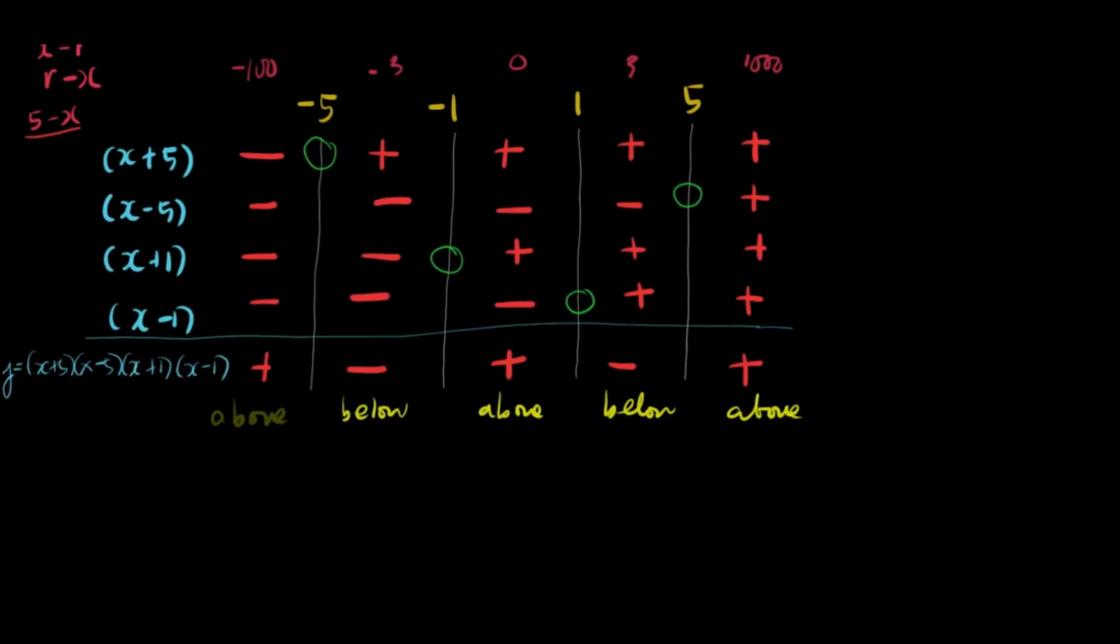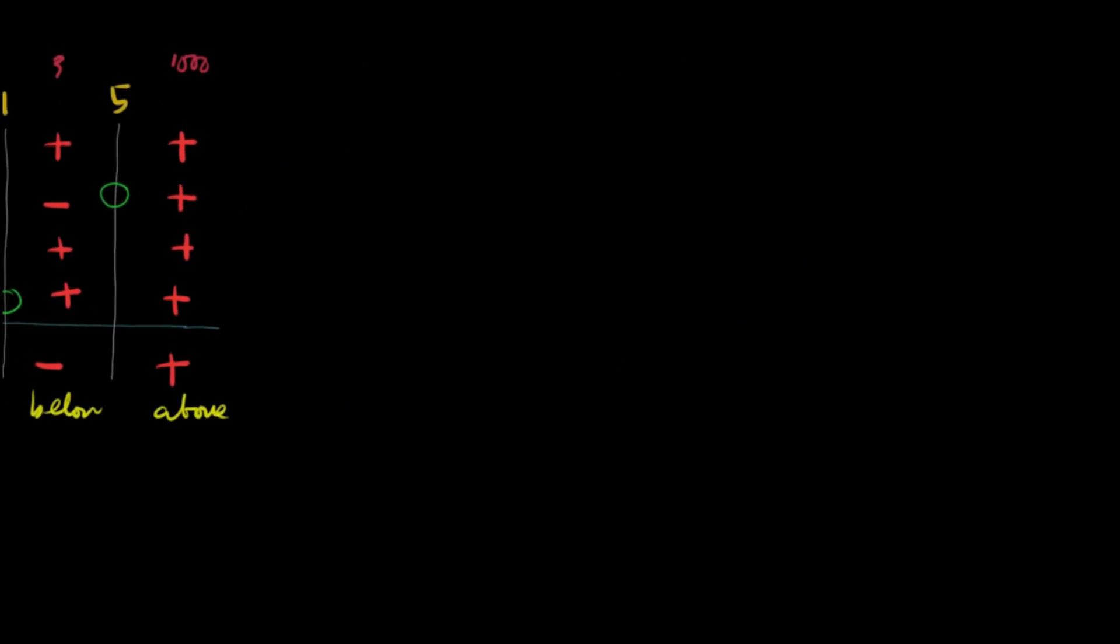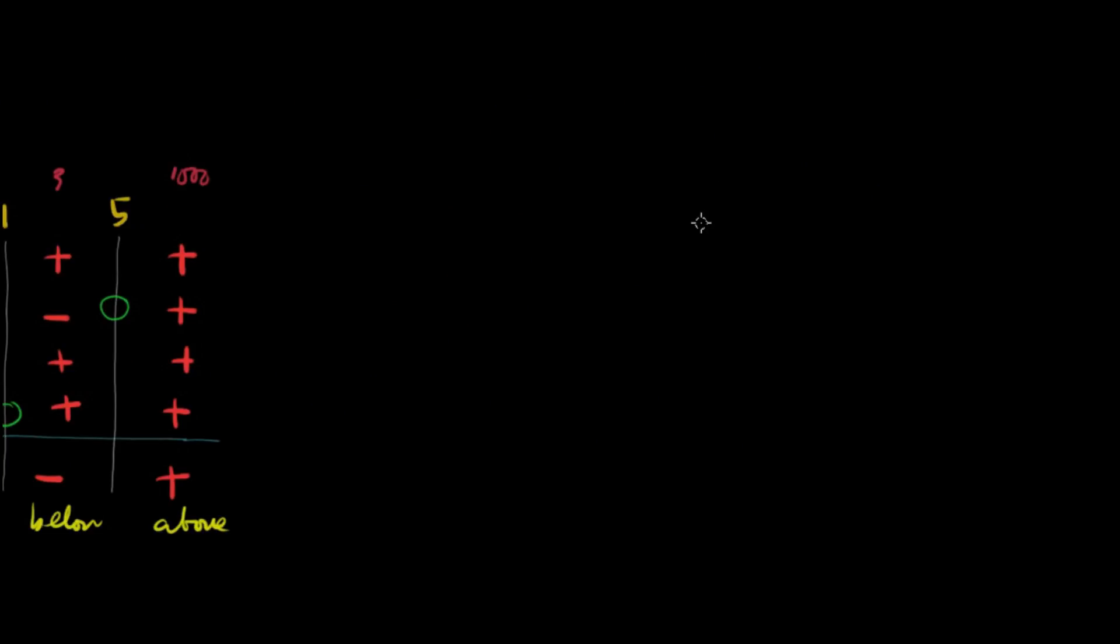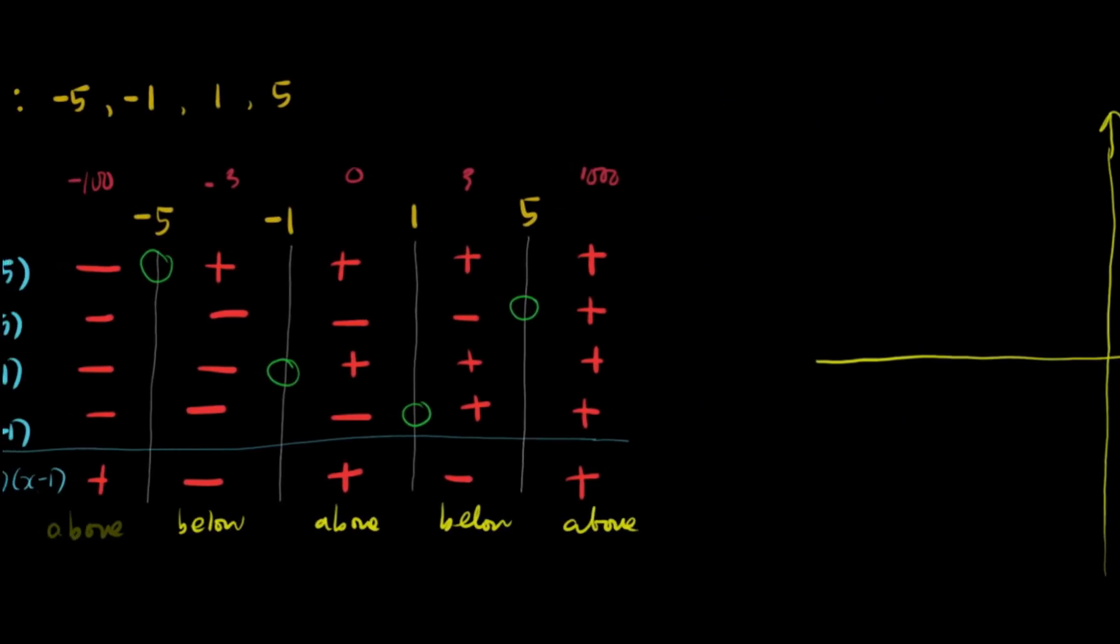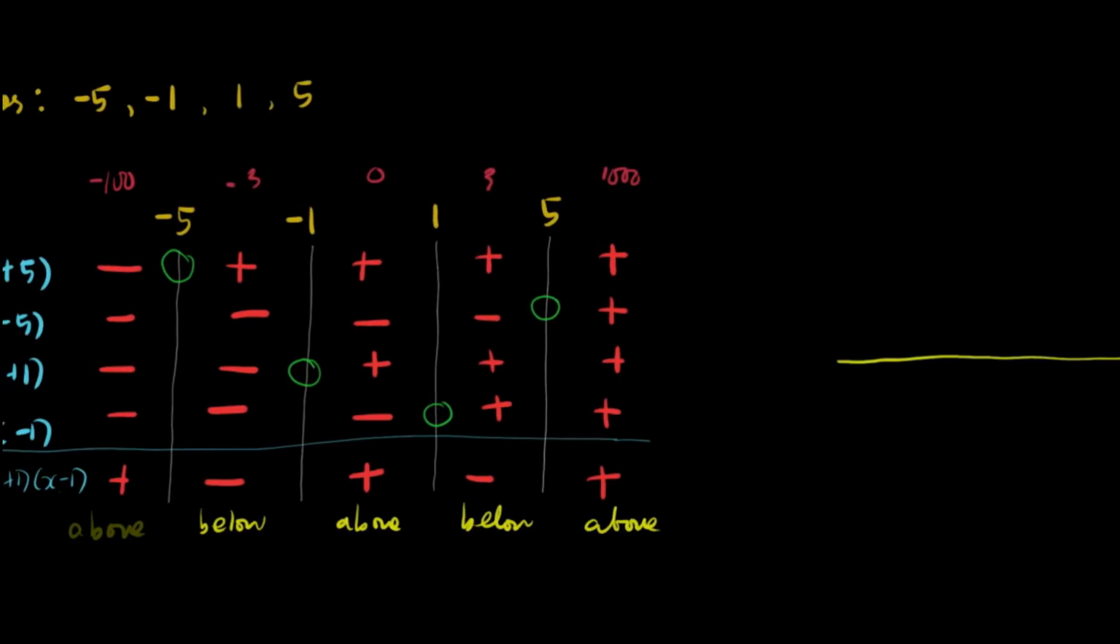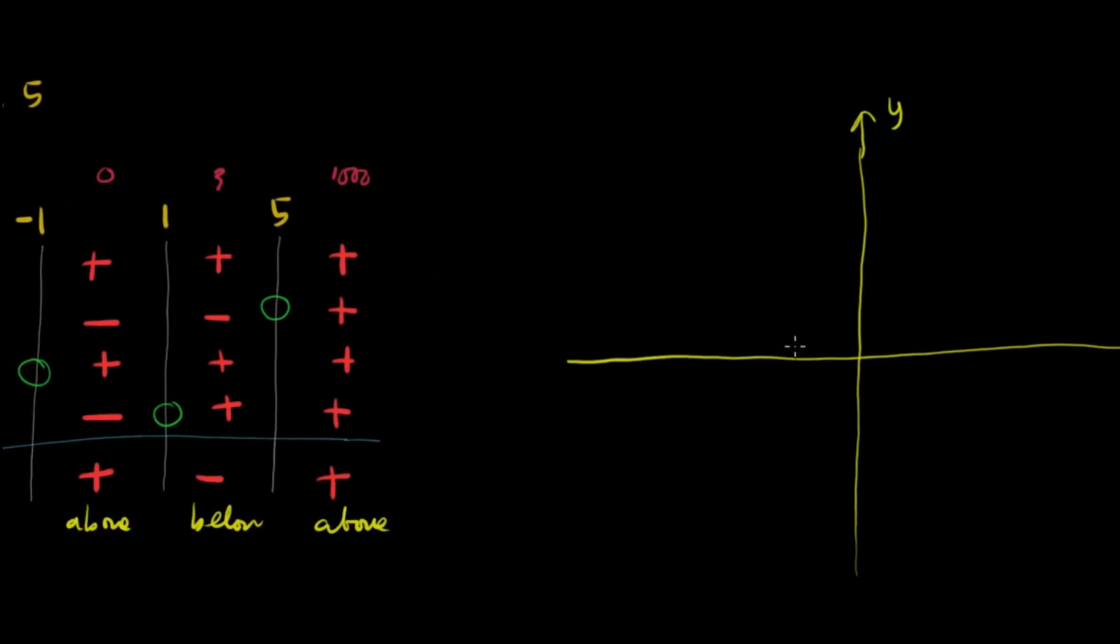Let's sketch the graph of the function. I think we can sketch the graph over here. So, let me have a straight line first. I think this will work. This is your y-axis. This is your x-axis. Let's plot the zeros. Starting with negative 5. So, negative 1, negative 2, negative 3, negative 4, negative 5. So, this is negative 5.